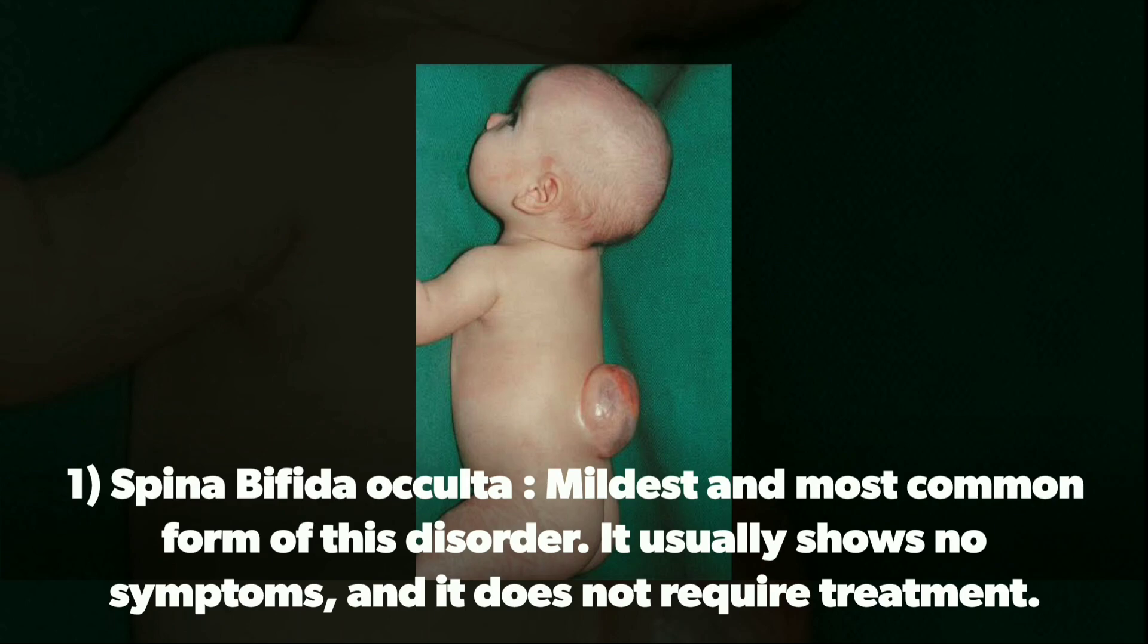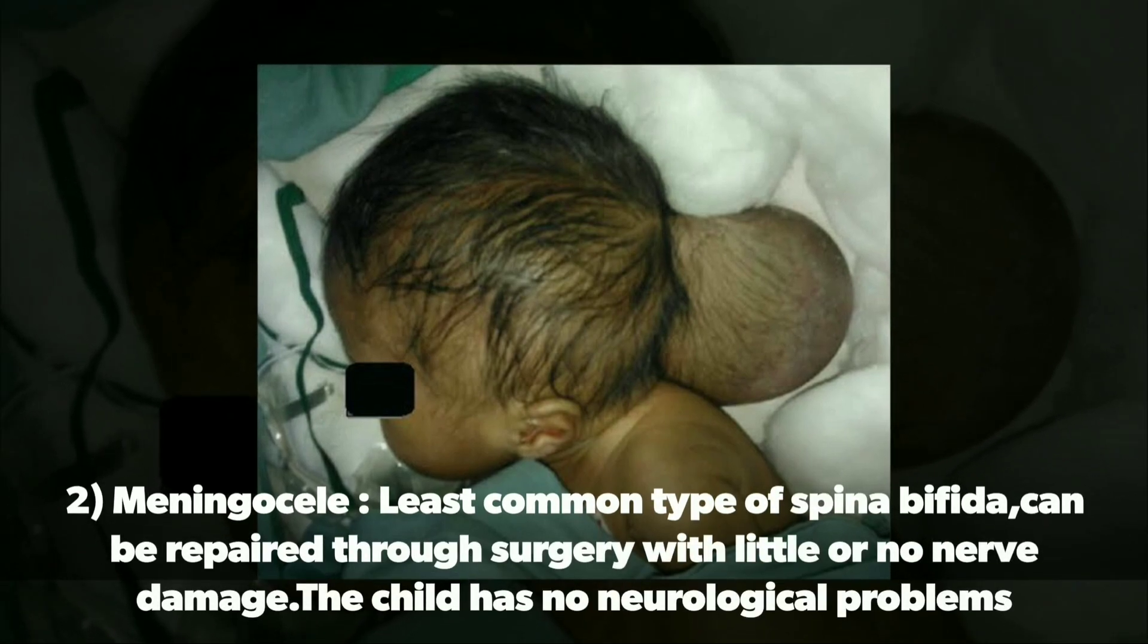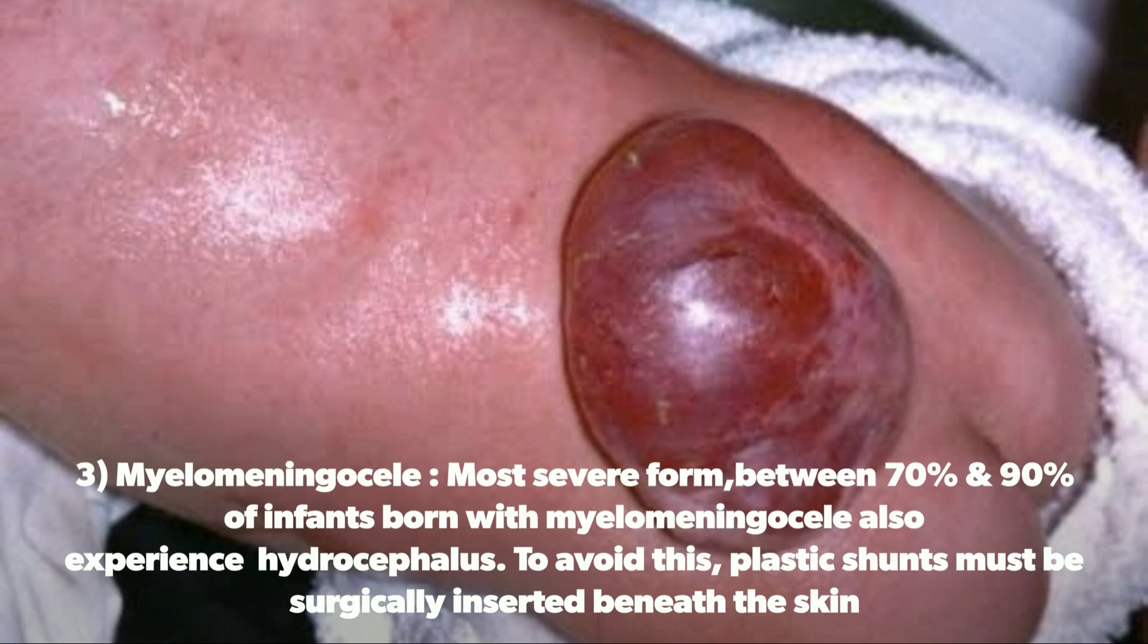However, infants born with a more serious type of this disorder have open lesions on their spine where there's significant damage to nerves and the spinal cord. The opening can be repaired through surgery, but the nerve damage isn't resolved, causing permanent disability.